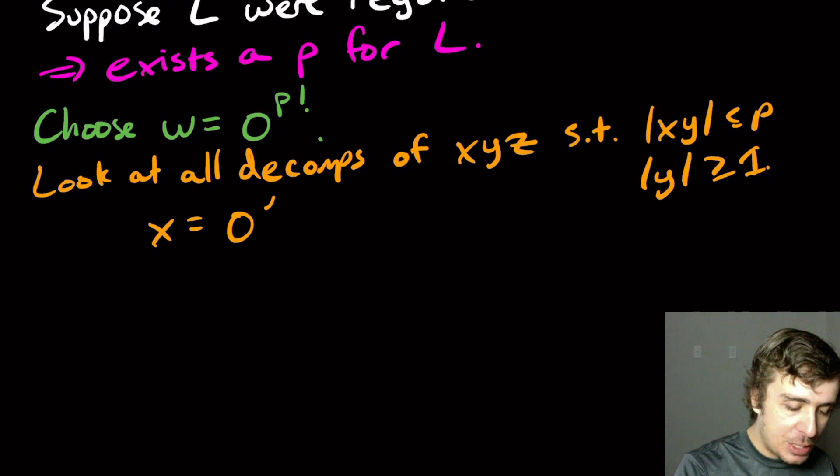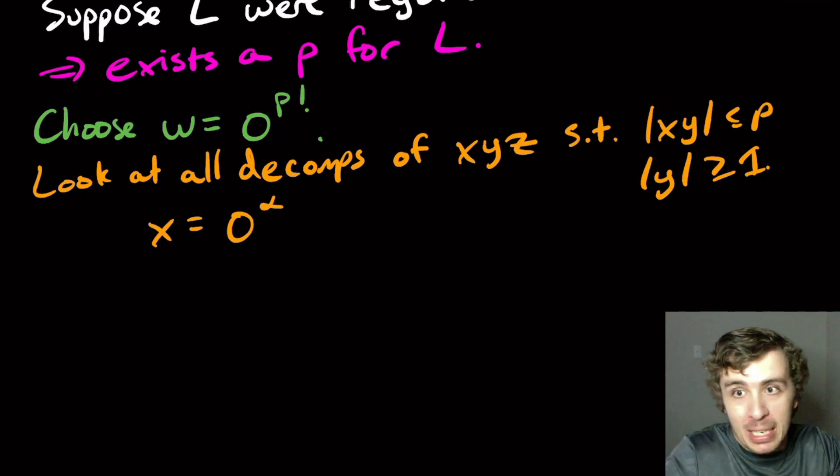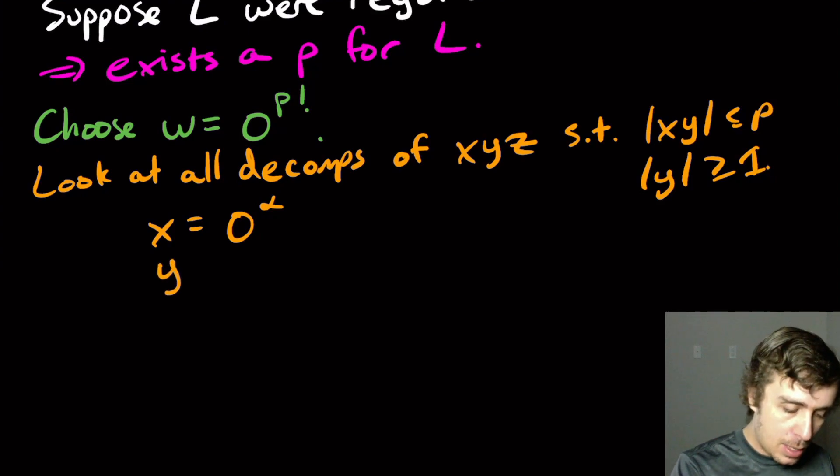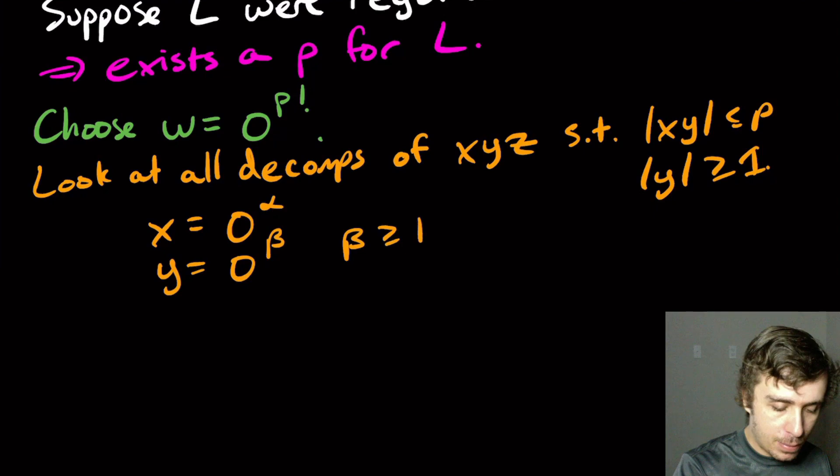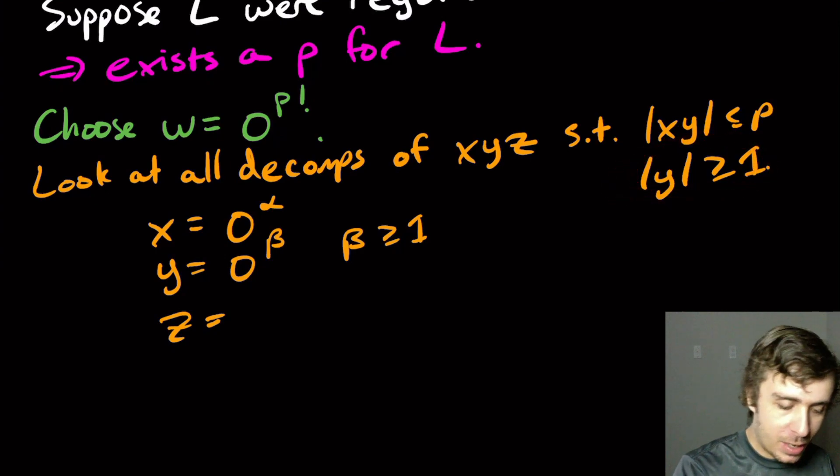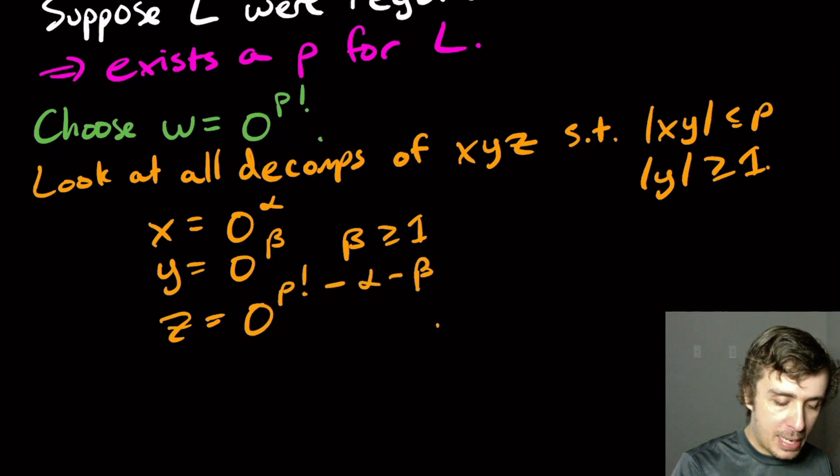So x is going to be some number of zeros since the whole string is zeros. I'm just going to call this alpha. Y is going to be some number of zeros. Let's call it beta. So beta is at least one, let's say. Well, actually, that's a rule. In fact, it's a rule over here. And then we have, well, what's the rest of the string? It's P factorial minus alpha minus beta.